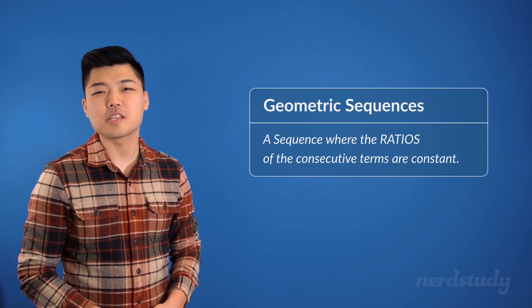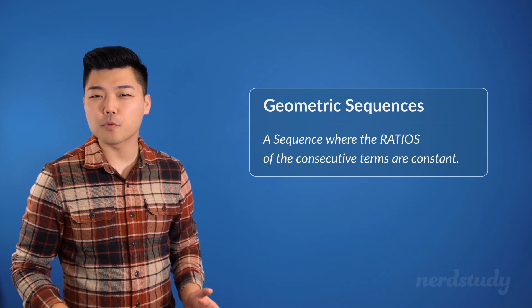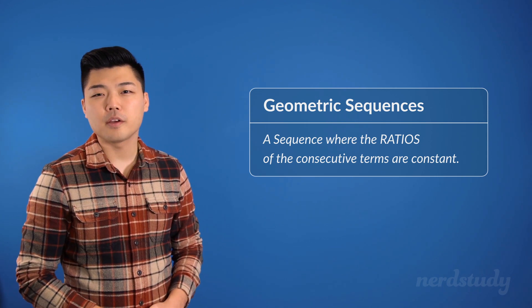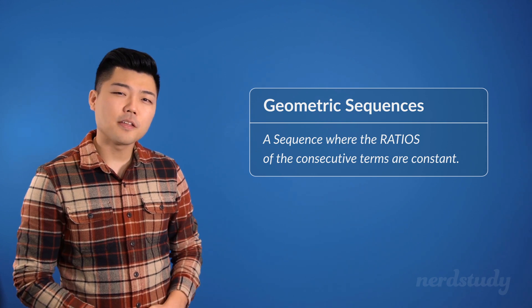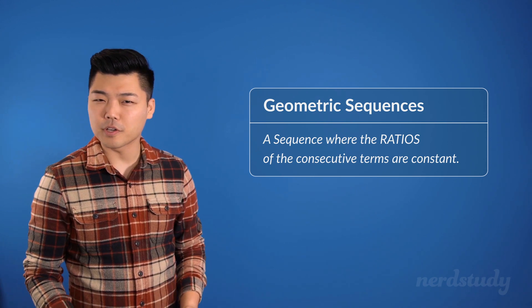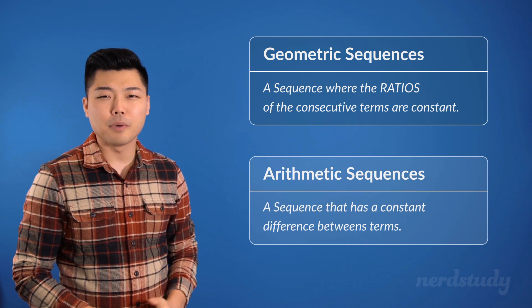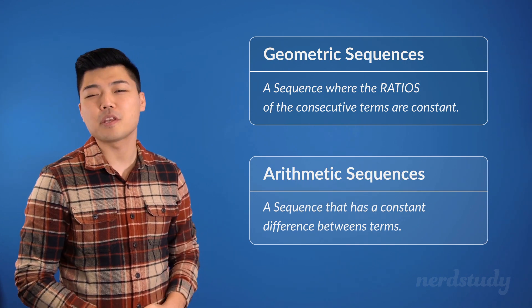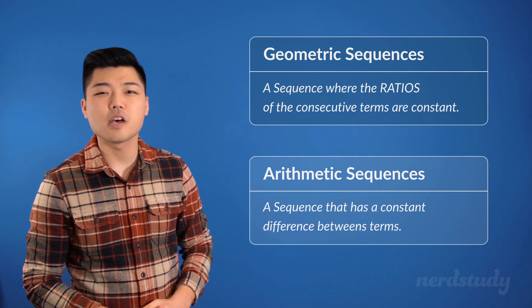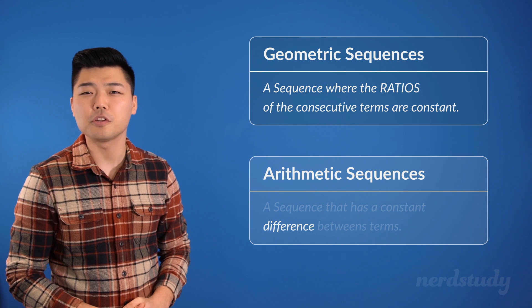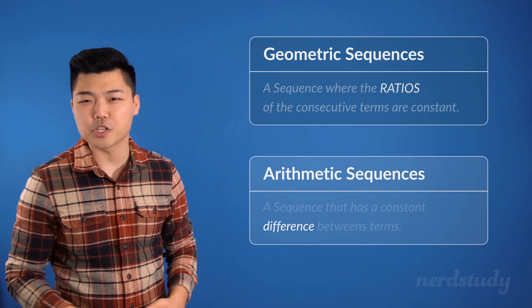A geometric sequence is defined as a sequence where the ratios of the consecutive terms are constant. Now, upon first glance, this might seem very similar to the definition of an arithmetic sequence. But the key thing to note here is that the arithmetic sequence uses the word difference, while the geometric sequence definition uses the word ratio.